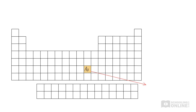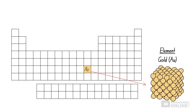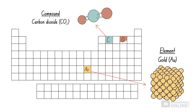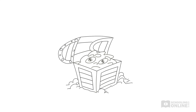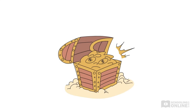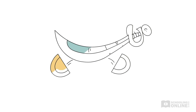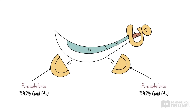Pure substances can be composed entirely of a single element, such as those found in the periodic table, or a compound in which two or more elements have been chemically combined. For example, the treasure chests stowed in the pirate ship are full of gold coins. The gold coins are pure substances because they're made entirely of a single element — gold. Even if the gold coins were broken in half, both chunks would still be made of pure gold. In other words, gold coins can be physically separated into identical products.